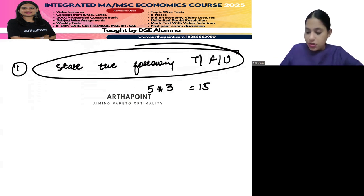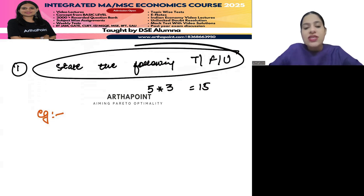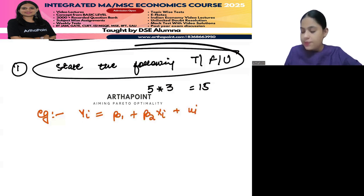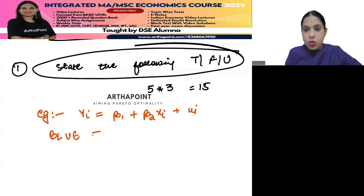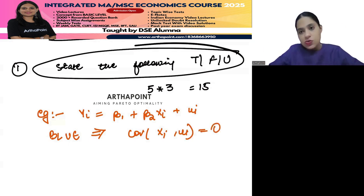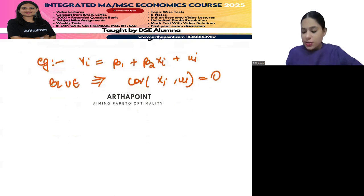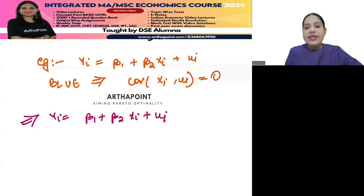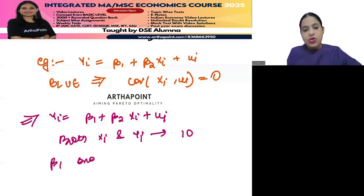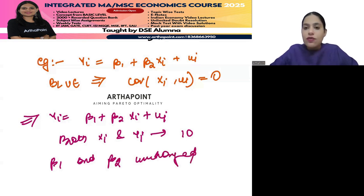For example, I give you a question: Yi = β1 + β2Xi + ui, and I tell you that one of the assumptions for parameters to be BLUE is that the covariance between Xi and ui should be zero - is that true or false? Or suppose Yi = β1 + β2Xi + ui, and both Xi and Yi are multiplied by 10, then β1 and β2 remain unchanged - true or false?